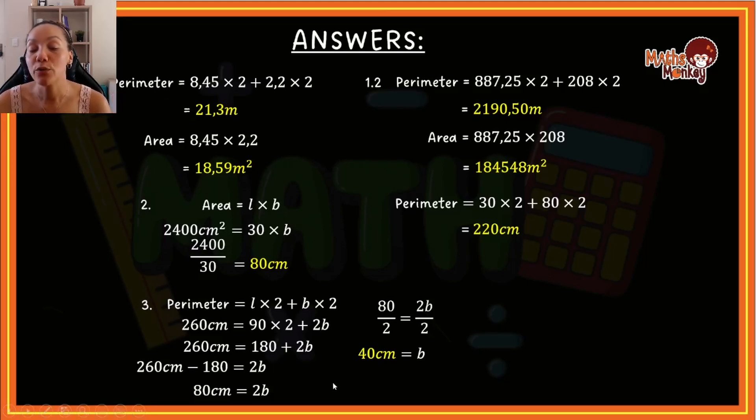I would suggest if you're struggling with this, to attempt the question over and over until you can come back and actually have the correct answer and try and identify where you're going wrong. Area then is length times breadth. And we now know that the one length was 90 and the one was 40. So we just multiply those by each other because this is the entire space that this rectangle takes up. And that will give me 3,600 centimeters squared.